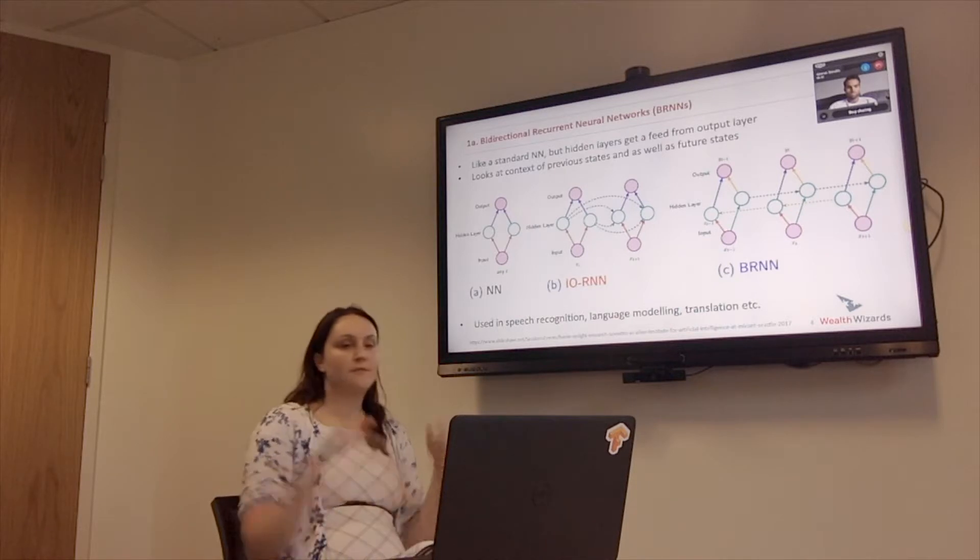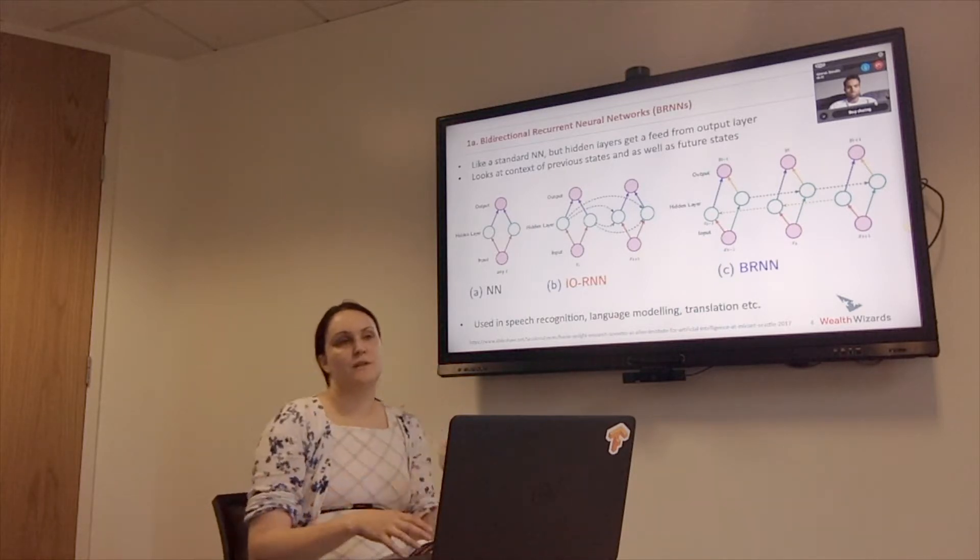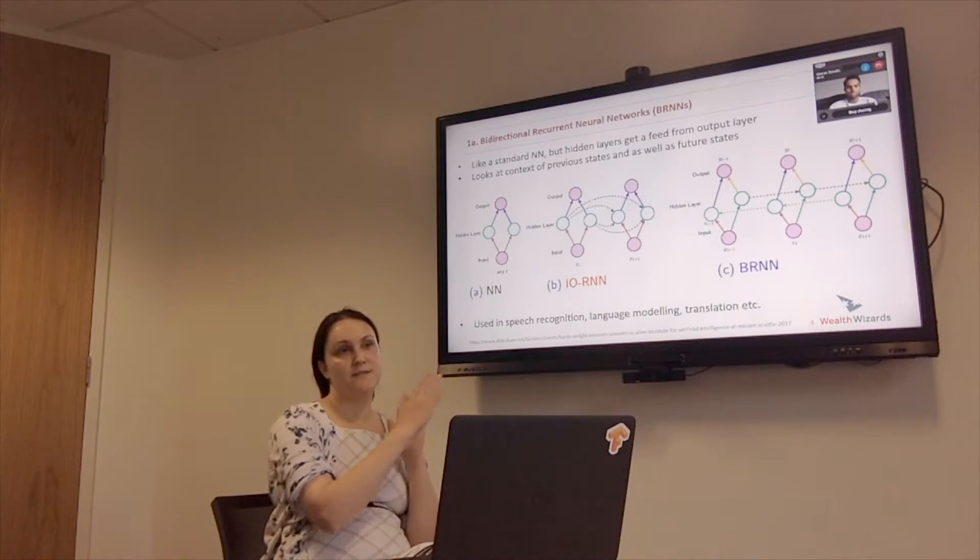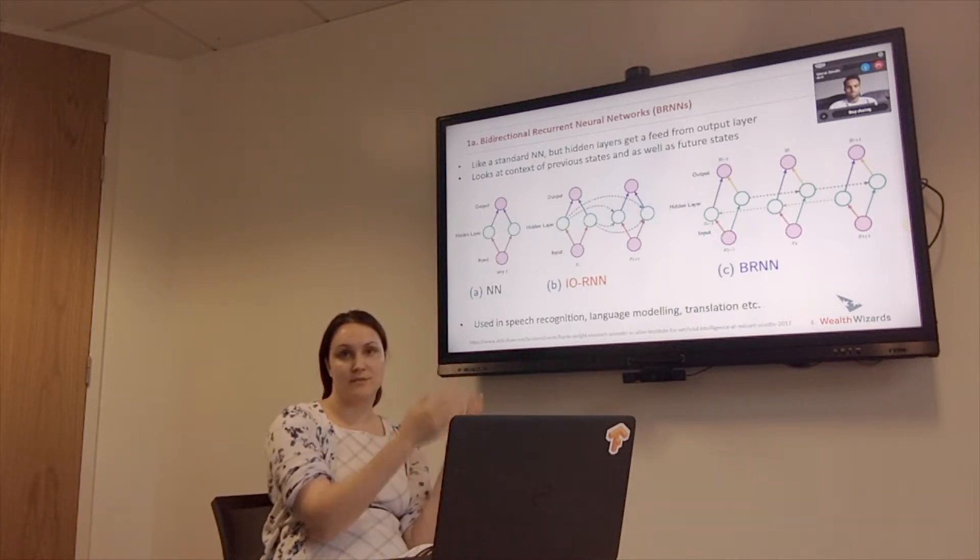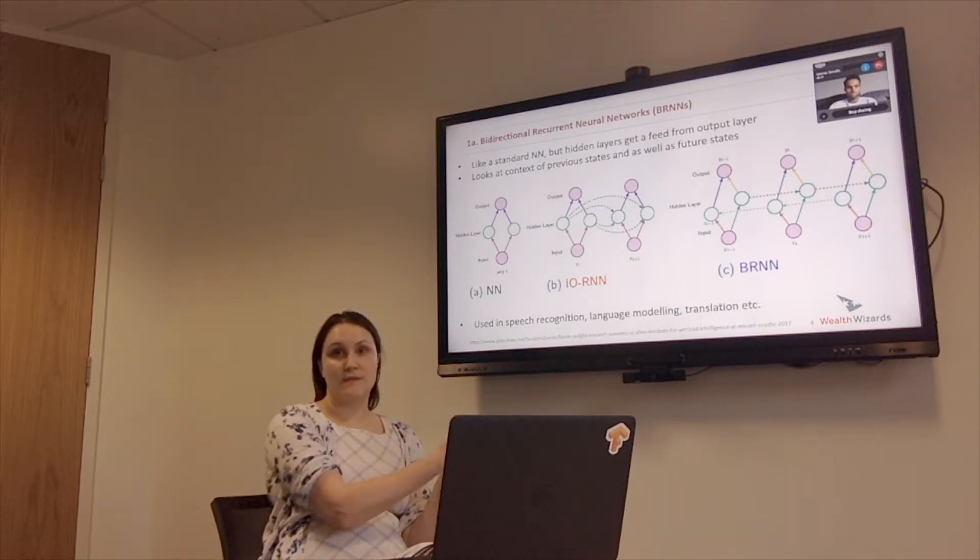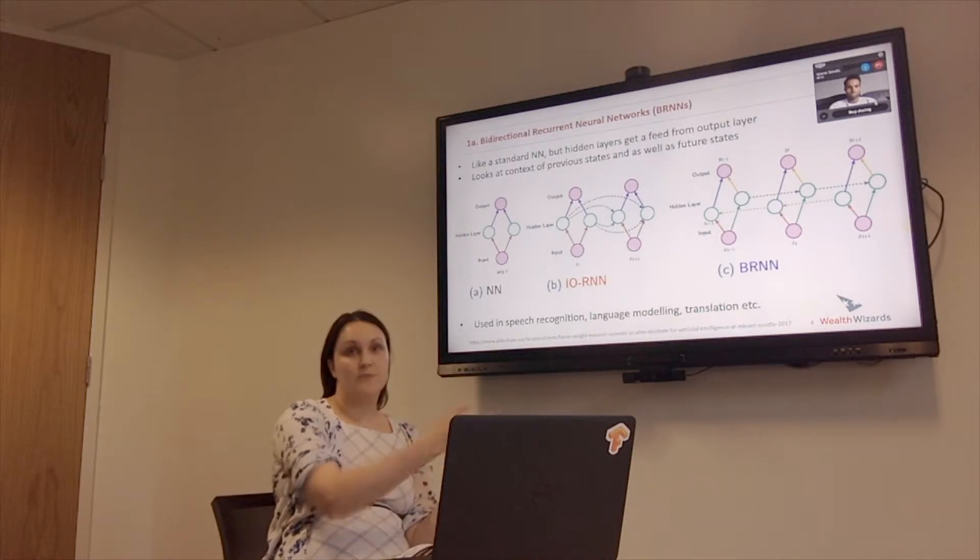So if we have, for example, a neural network that was trained on the word steep, spelling the word steep, and it can only suggest letters from that word. And if you put in an S it would know, okay T comes next because we've seen that before. And then E comes after T.